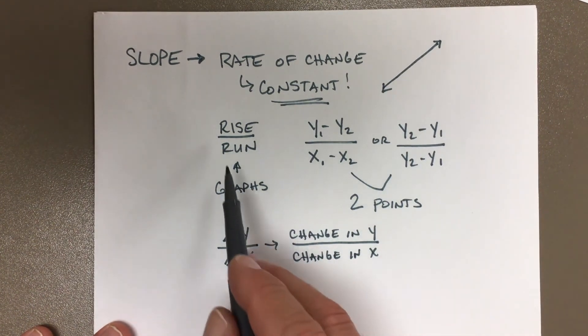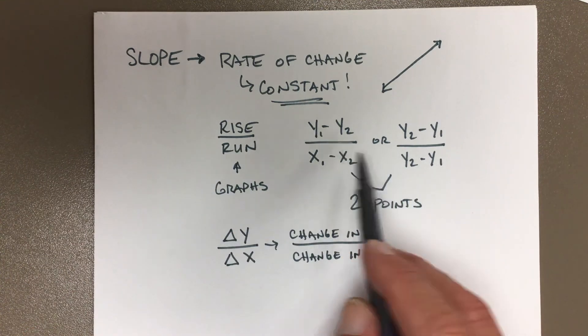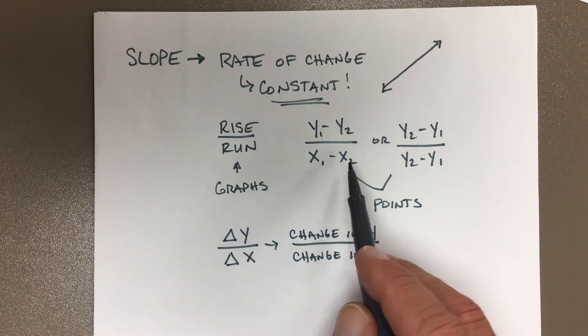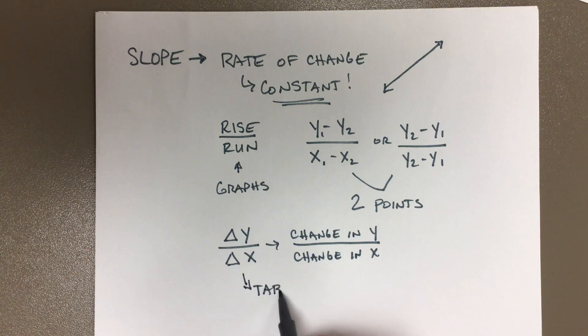So these are really three things. You got rise over the run, you've got the difference of two points (the y's over the x's), and then you have the change in y over the change in x. Most of the time you use this one in tables, and that's what we're going to get to next. Alright, cool.